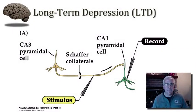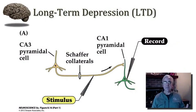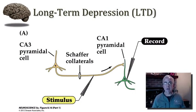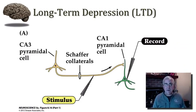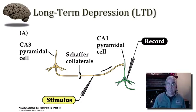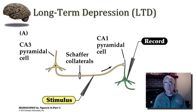We're now ready to move on to consider the opposite form of plasticity that we see in the cerebral cortex: long-term depression. This was first studied and its mechanisms well understood within the hippocampus of the rodent model system. We're going to use the very same Schaffer collateral connection from CA3 to CA1 in order to demonstrate long-term depression.